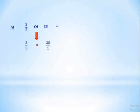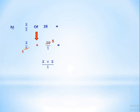Next problem: three-fifths of 5. The word 'of' means multiply. So we multiply three-fifths by 5. Since 5 has no denominator, we write it as 5 over 1. We have 5 and 5 — we can simplify: 5 divided by 5 equals 1. Then multiply numerator by numerator and denominator by denominator: 3 times 5 equals 15, and 1 times 1 equals 1. So the answer is 15 over 1 equals 15.